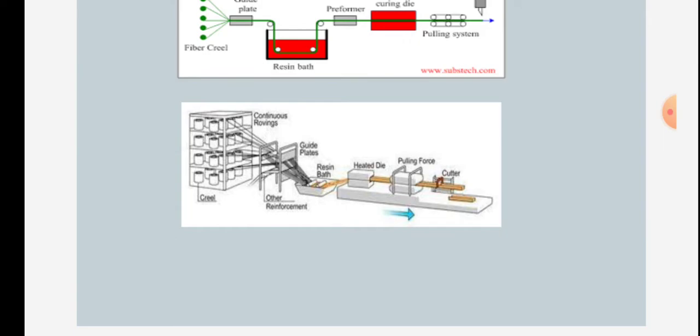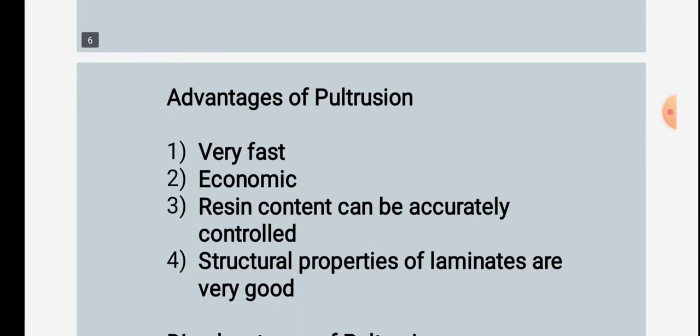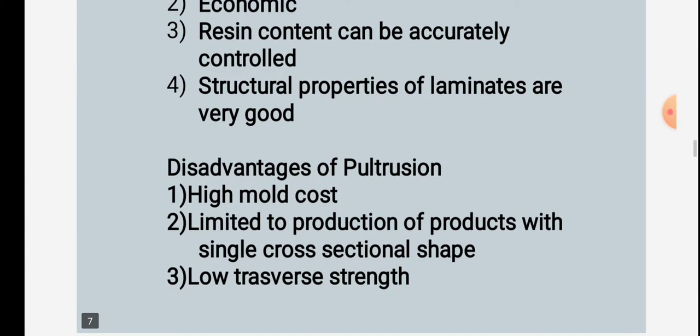Advantages of pultrusion: the process is very fast and economical; resin content can be accurately controlled; and structural properties of the laminates are very good.